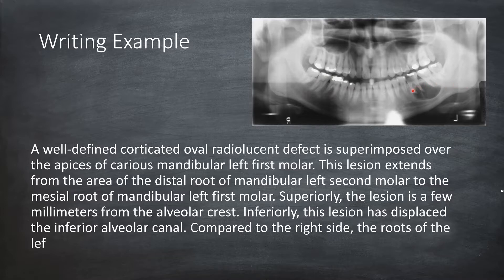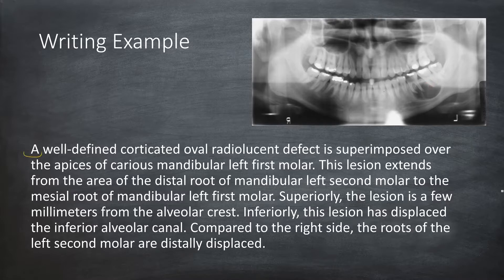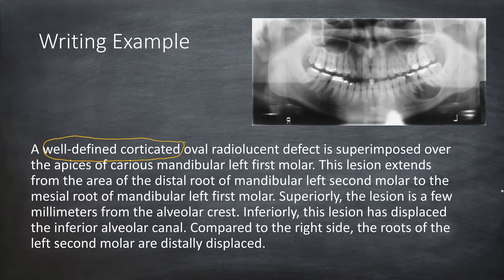Compared to the right side, the roots of the second molar are distally displaced. The word 'A' means there is a single lesion — this also means the lesion is localized, not generalized. We can rule out any systemic condition by this description. The words 'well-defined corticated' describe the border of the lesion. Typically, cysts or benign tumors have well-defined and corticated margins. By using these words, we are ruling out infection or malignancy.